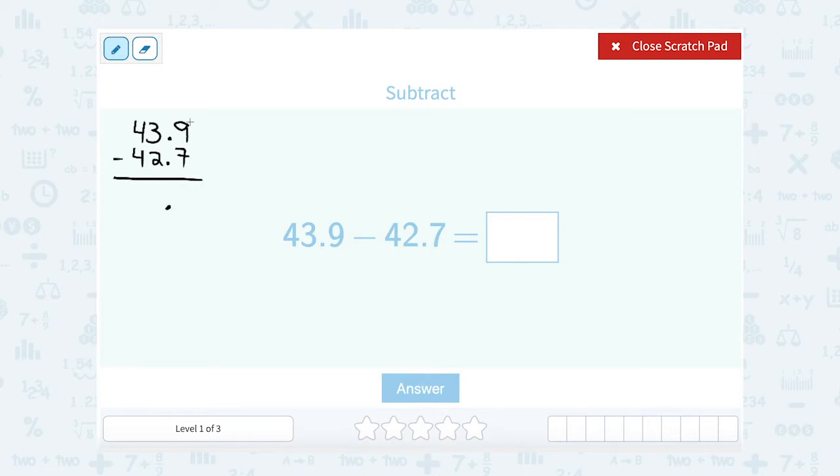And now I can subtract. 9 minus 7 is 2 in the tenths place. In the ones place, 3 minus 2 is 1, and in the tens place, 4 minus 4 is 0. So it's a difference of 1.2.